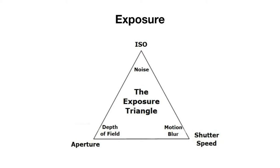ISO refers to the actual sensitivity of the sensor or the film. If the ISO is higher, it will be more sensitive to light and that will result in a brighter image. A lower number will result in an image that's darker because the sensor will be less sensitive to light. A side effect of ISO is something called noise, or with film, grain. Higher sensitivities will not just result in brighter images, but produce a digital artifact — a grainy speckling called noise. Lower ISOs result in less noise and a cleaner, sharper image.